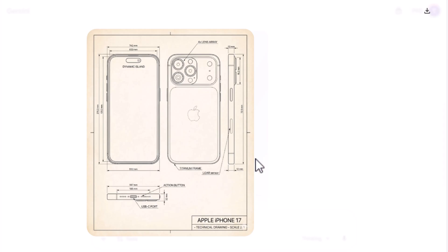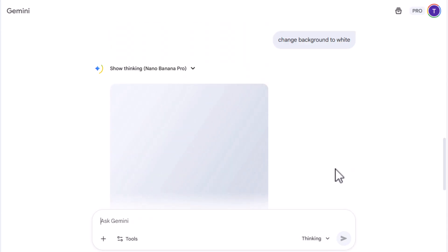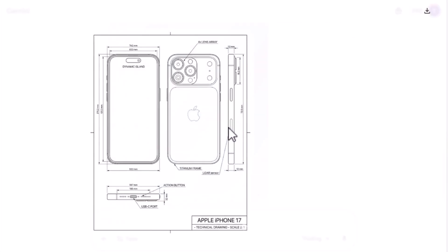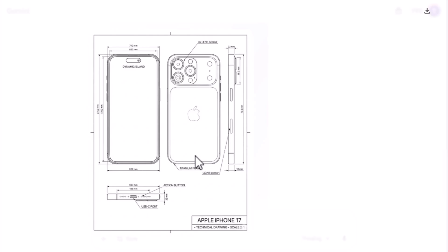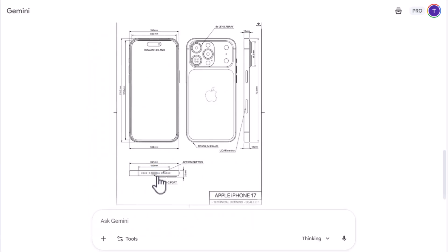Now I want to change the color from this yellowish to a whitish color. So all I have to do is go to the Nano Banana prompt in Gemini and type in 'change the color to white.' And here we have it — the white drawing of this iPhone 17. This design looks like something from a technical sheet you'd find online, like someone spent hours drafting it.